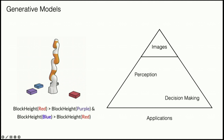Another thing you can imagine doing with generative models is decision-making. You can take hundreds of billions of demonstrations of how you can move in the world — like how you can pick up something or walk into a room — and then tell this generative model, given what I see in the moment, to perform a particular behavior seen in the past. For example, generate a trajectory that can stack a red block on top of a purple block, and a blue block on top of a red block.